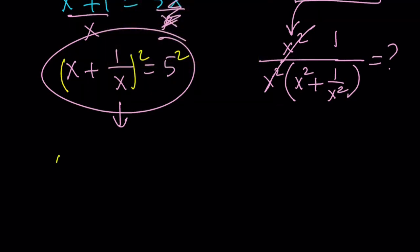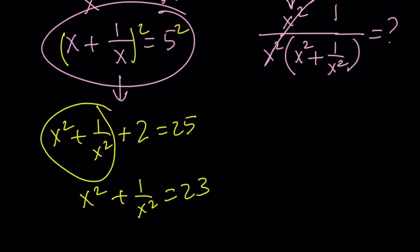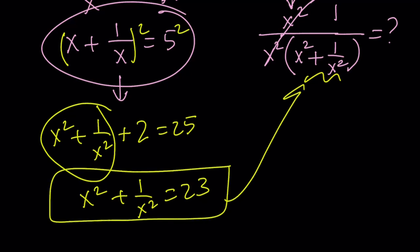And that's going to give us the following. x squared plus 1 over x squared plus 2ab is going to give me 2 equals 25. If you subtract 2, you get x squared plus 1 over x squared equals 23. And if you go ahead and remember, this is what we were looking for. If you go ahead and substitute that here, then you'll get the answer as 1 over 23.